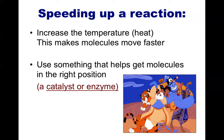Another way to speed up a reaction is to use something that helps hold the molecules in the right position or orientation. In our analogy, if a third person was there and could hold the two blindfolded people in place in the correct orientation, the handshake would happen much quicker. This third person is acting as a catalyst or enzyme — it is taking two or more molecules and holding them in the correct orientation for the reaction to happen. It's sort of like a molecular group hug, since the enzyme usually squeezes the other two molecules together a bit.